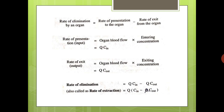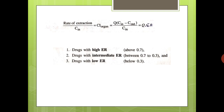The rate of extraction divided by CIN gives us the extraction ratio (ER): ER = (CIN − COUT) / CIN. This can also be written as: clearance of organ = Q × ER, where Q is the organ blood flow and ER is the extraction ratio.